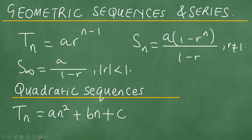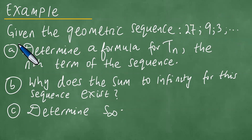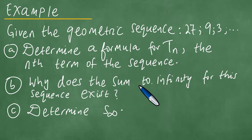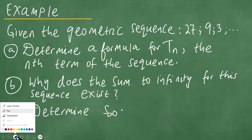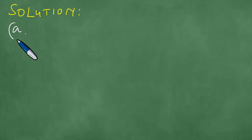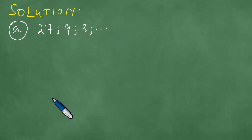The first thing we shall focus on is an example. We are given the geometric sequence with terms 27, 9, 3, and so on. We need to determine a formula for tn, the nth term of the sequence, and also determine the sum to infinity.